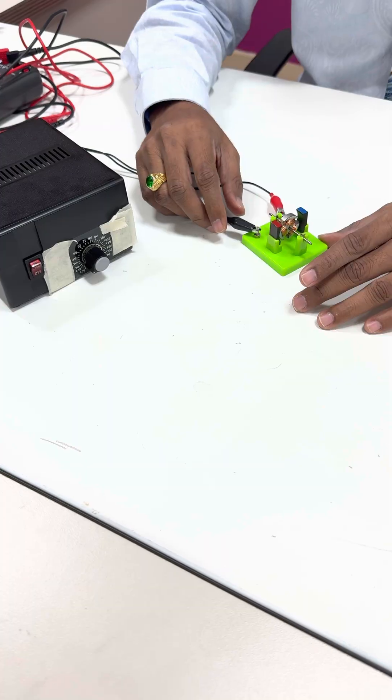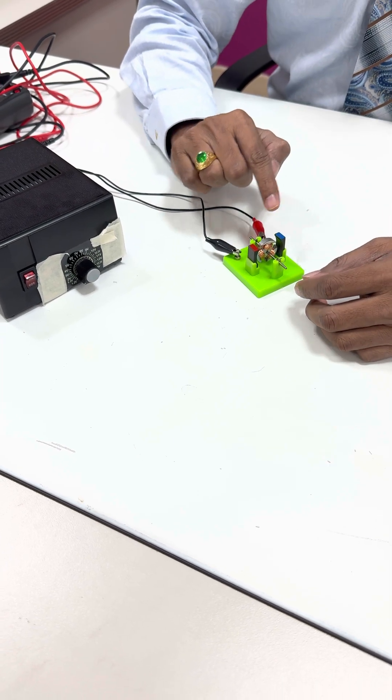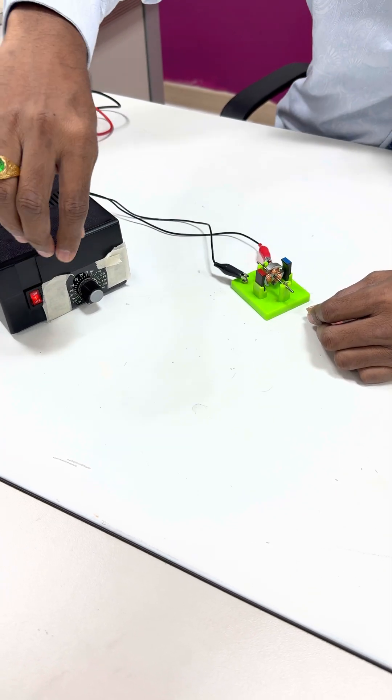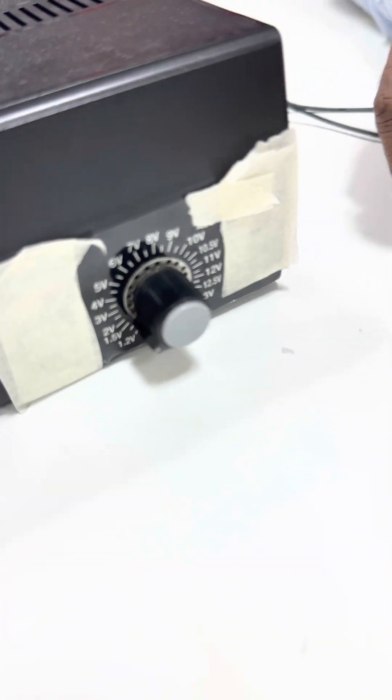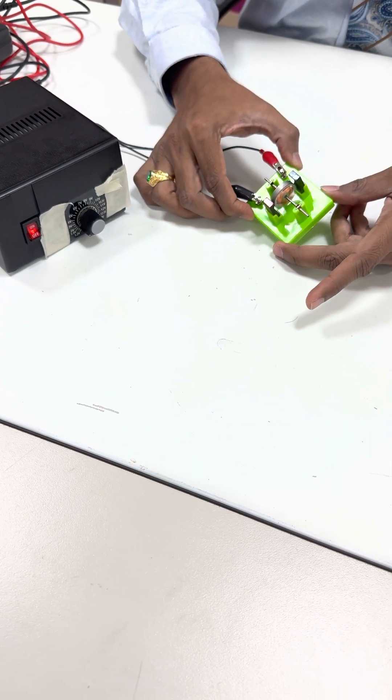Stop, stop, stop. Now let us understand what are the factors affecting the speed. Now if I switch on, yes. Now it is one volt. Is it one volt? Yeah. Look at the motor. Now it is rotating with some speed.